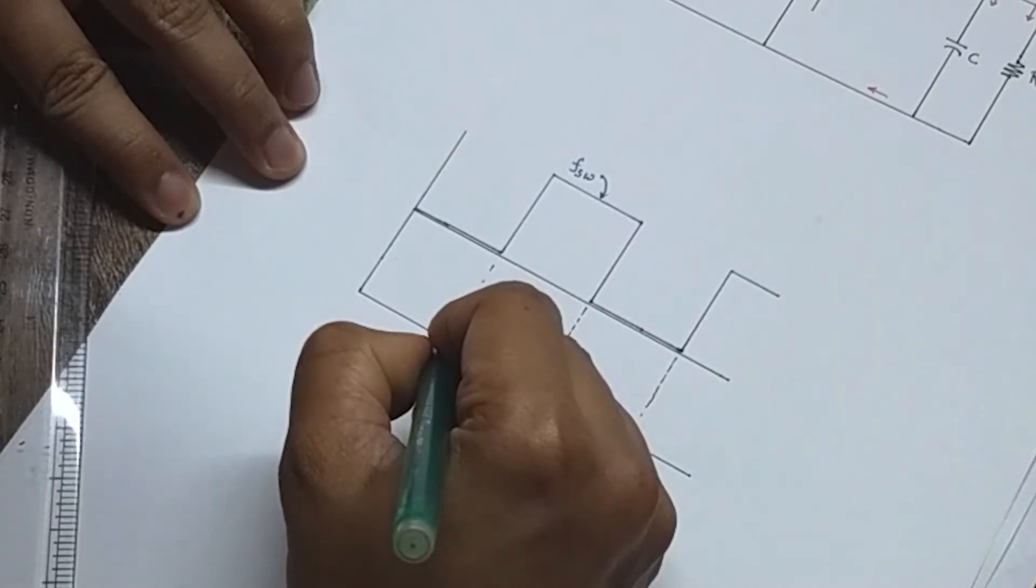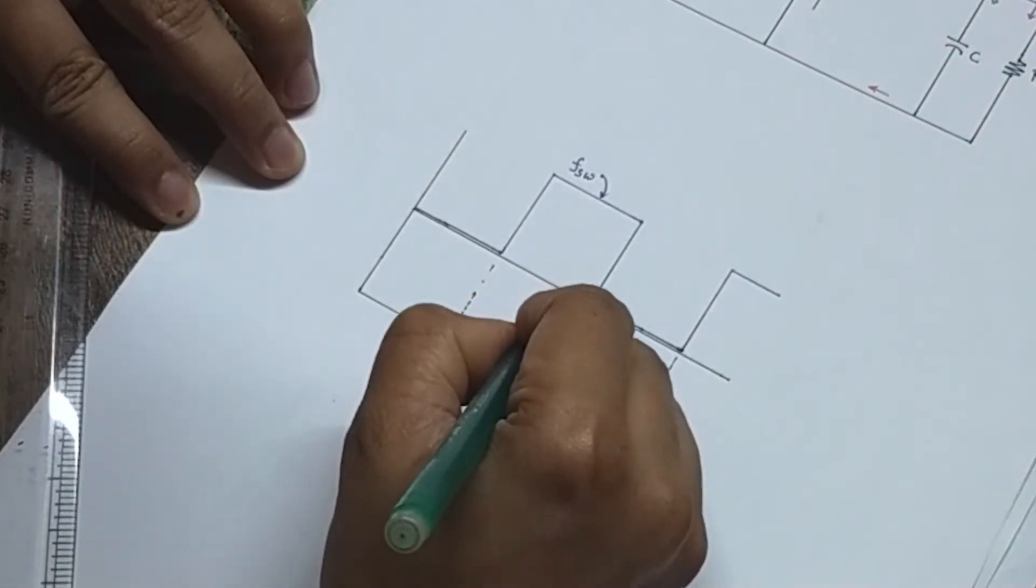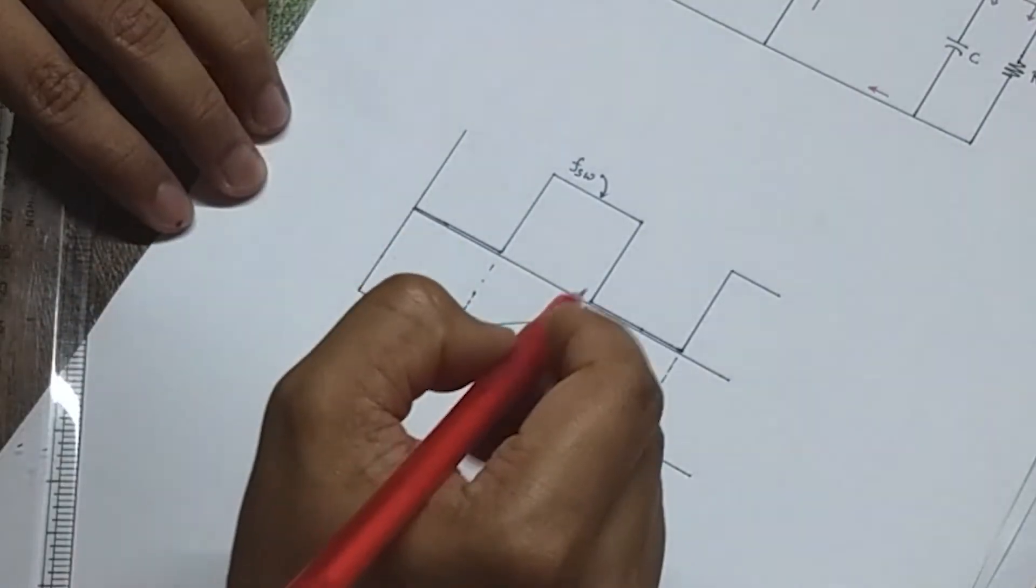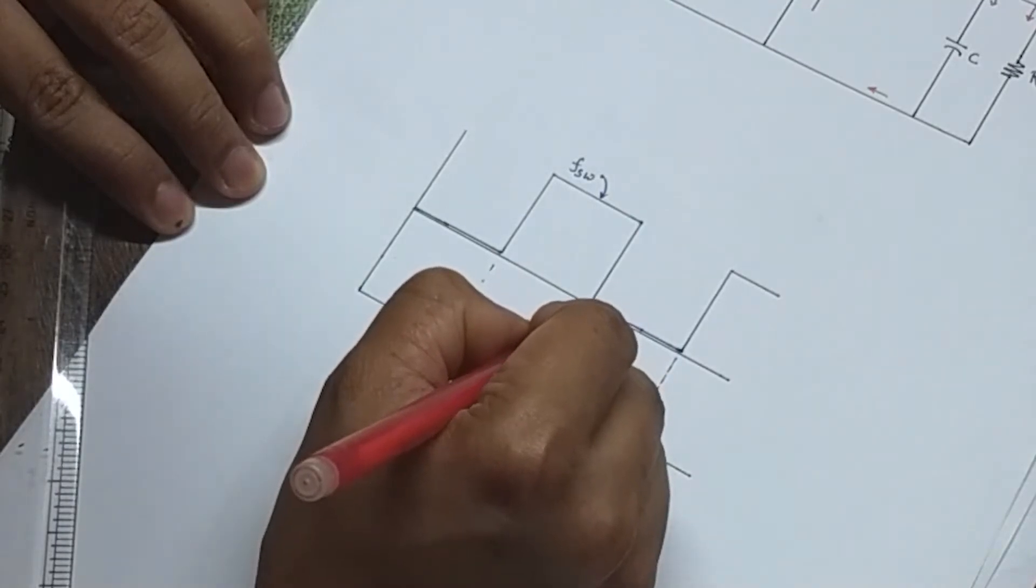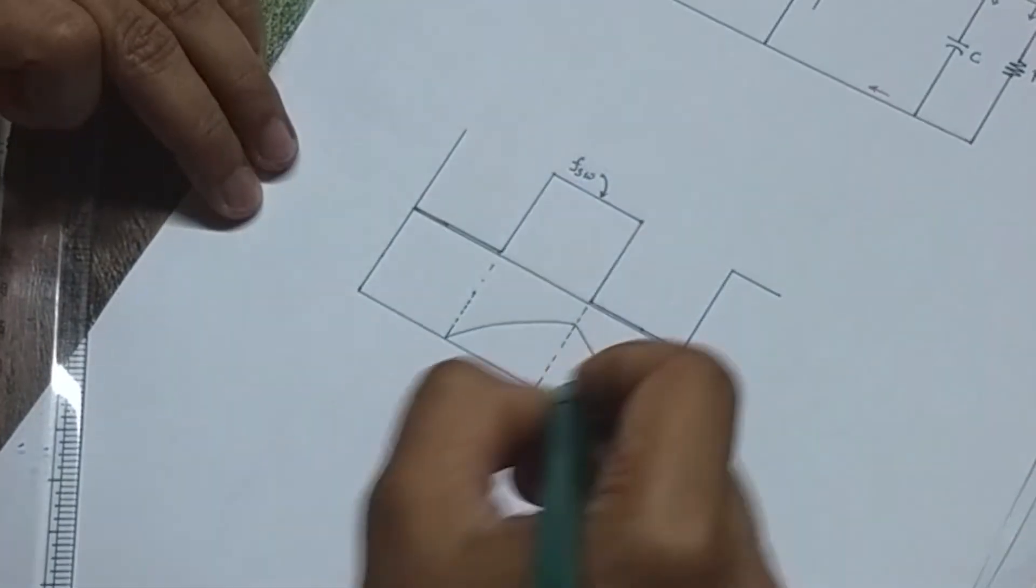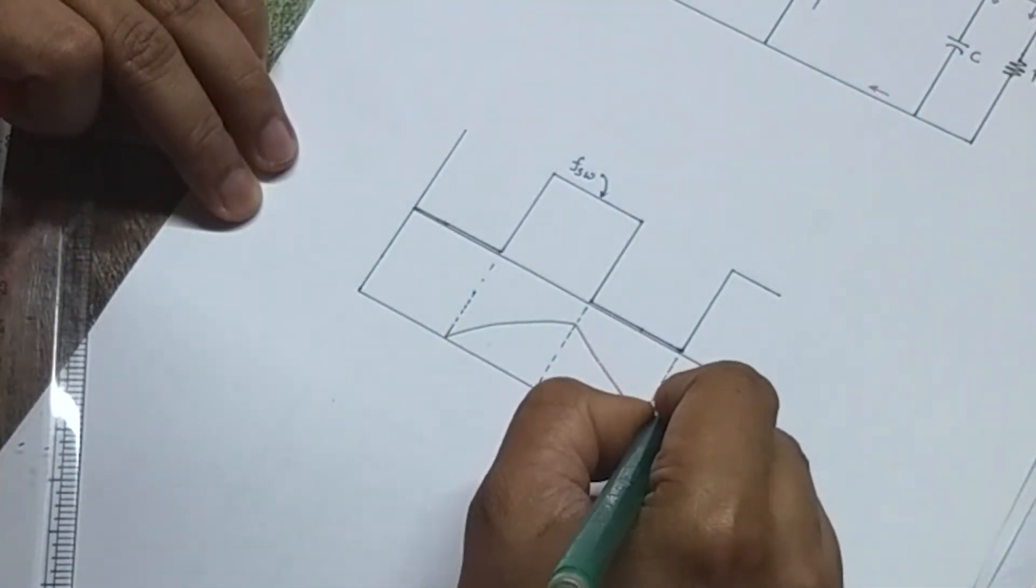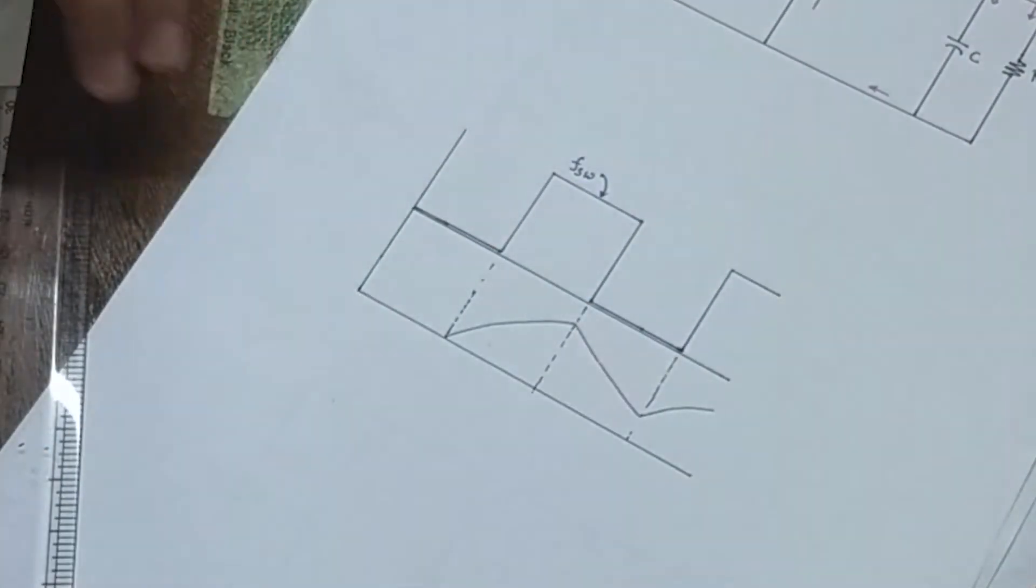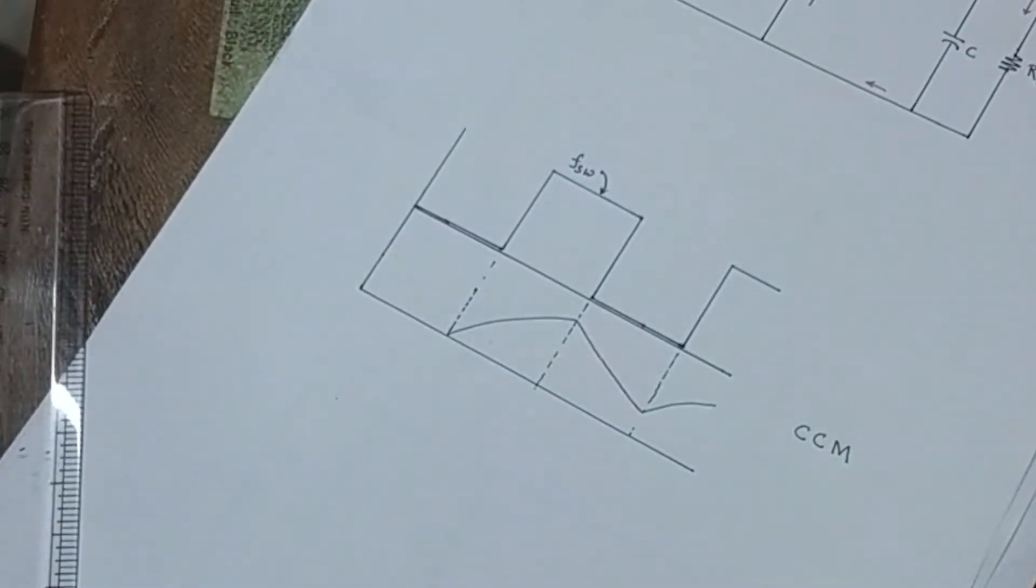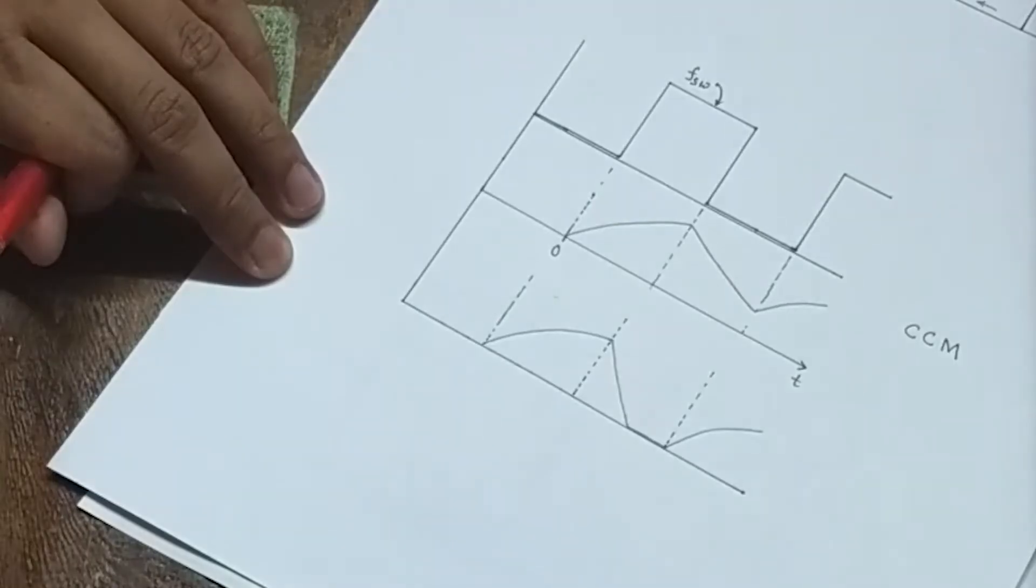There are two modes of operation for a buck converter: continuous current mode or CCM and discontinuous current mode or DCM. If the energy stored in the inductor could not get a chance to fully discharge and the switch turns on again while the freewheeling current is still running in the circuit, it will be called CCM operation because here the current is always flowing through the inductor.